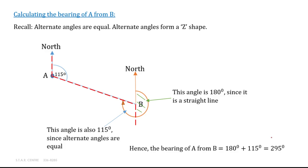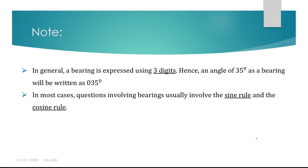A bearing is usually represented using three digits. So if we have an angle that is just 35 degrees, you need to write it using three digits — we write zero at the front. So 035 means just 35 degrees, but bearings must be expressed using three digits. Questions involving bearings usually involve the sine rule and cosine rule, and can also involve Pythagoras' theorem or trig ratios. Note that Pythagoras' theorem and trig ratios are only used for right-angled triangles — they cannot be used for non-right-angled triangles.